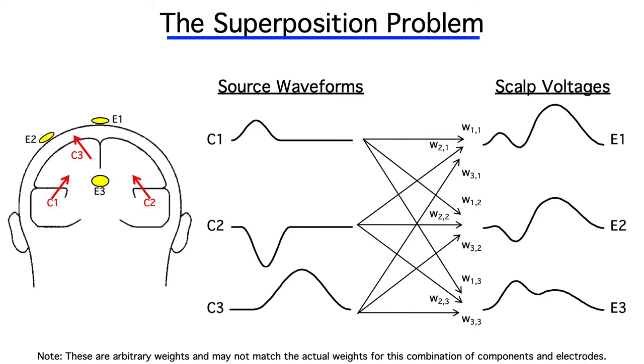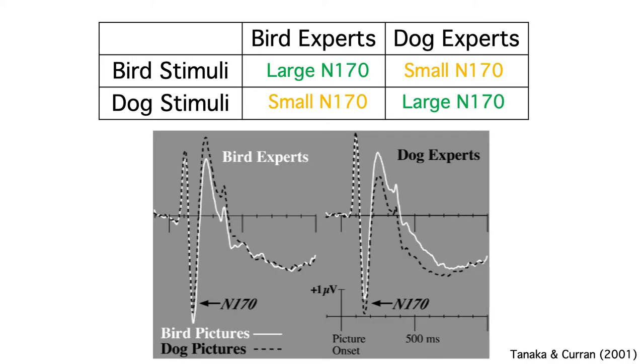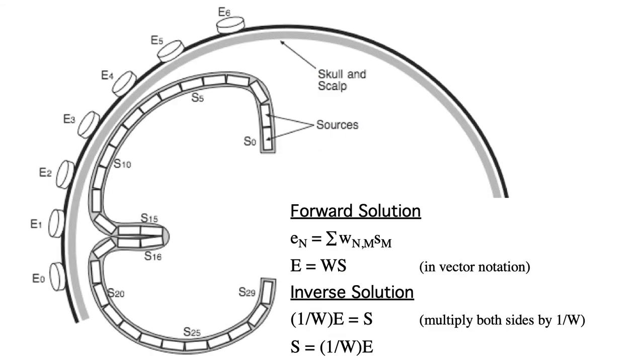There are two general classes of solutions to the superposition problem. The first is to combine clever experimental designs with simple but thoughtful analyses of the data. The second is to try to mathematically estimate the locations and source waveforms of the underlying components.